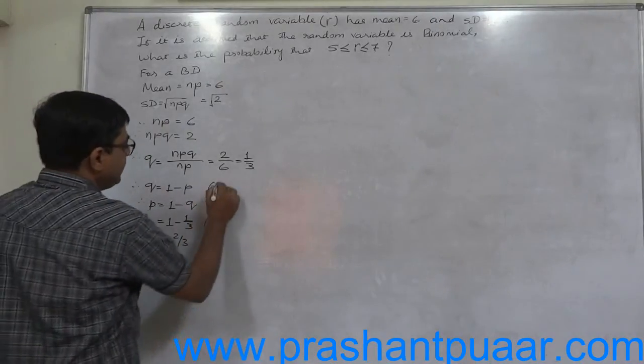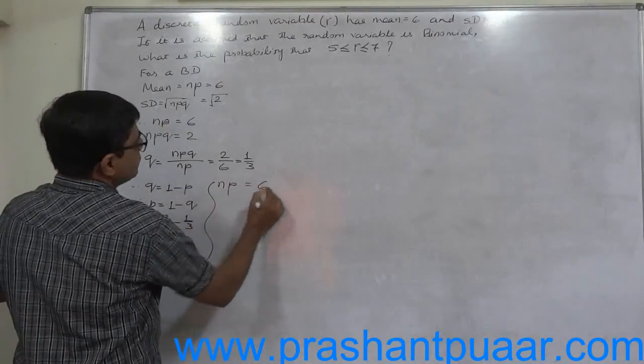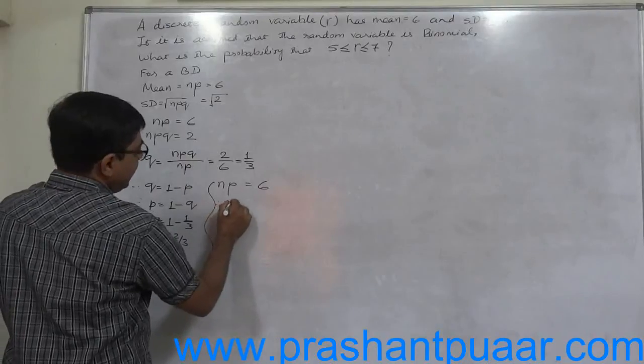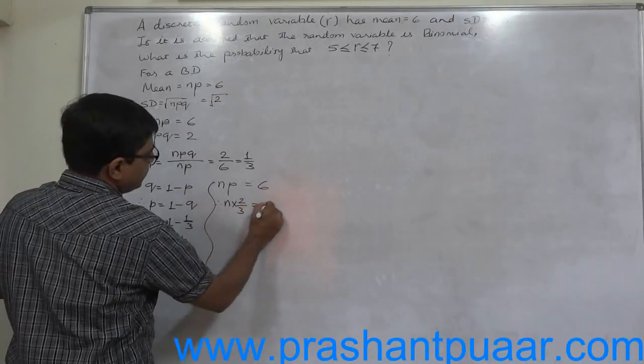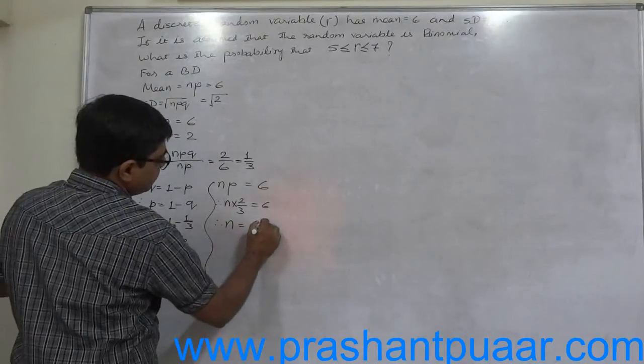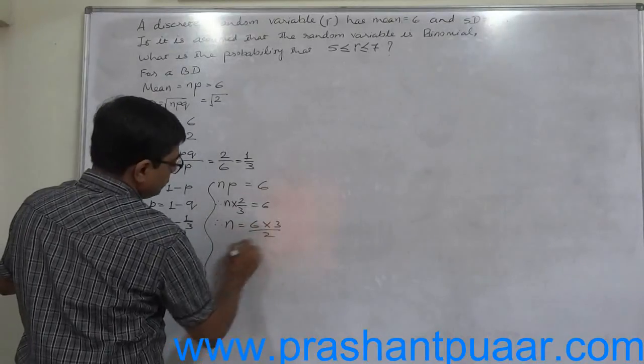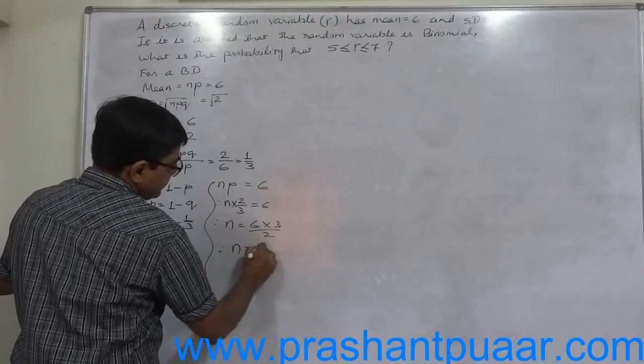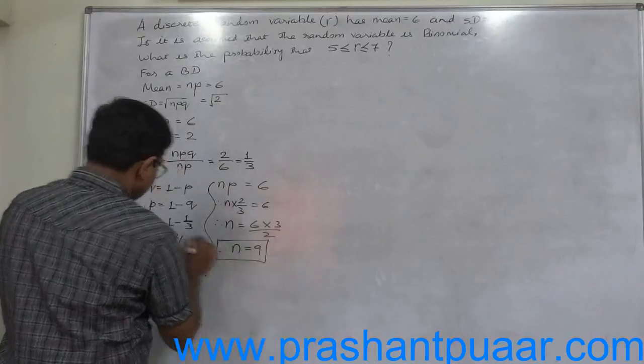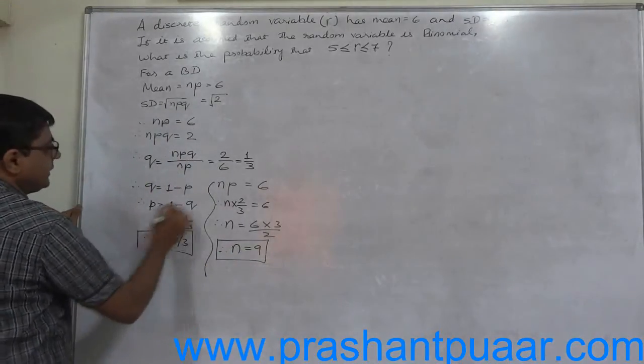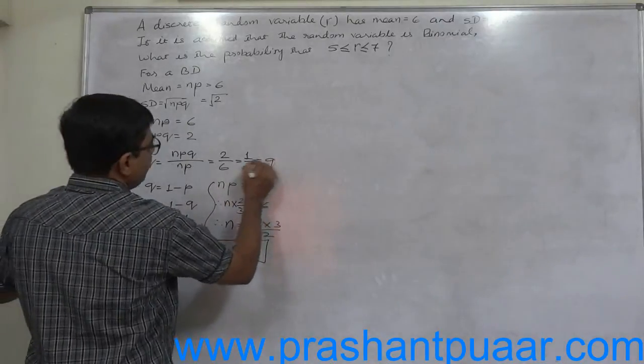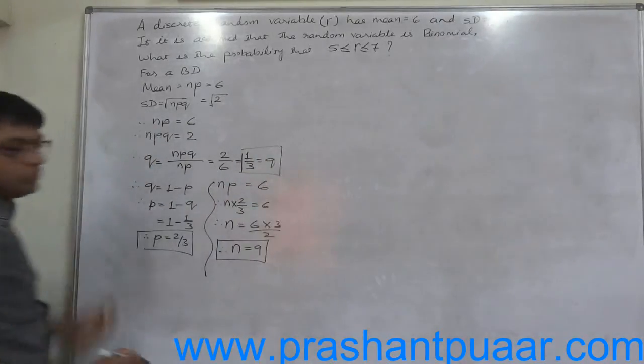Now we have np. np equals 6, that means n times 2/3 equals 6. That means n equals 6 times 3/2, so n is 9. In this way, first we have to find the values of n, p, and q.